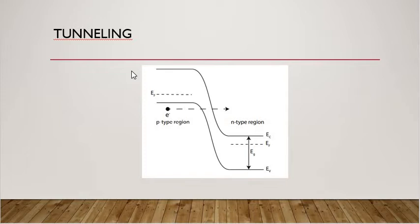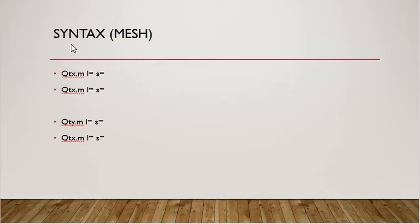I will teach you the syntax for defining quantum mass at the bottom. You define qt x dot m l, where l is the location as a spacing — similar to the mesh you have defined above with x dot m and y dot m, but here qt comes before x. So you define qt x dot ml equal to the location where tunneling occurs. If it is mentioned in your paper, you can directly use that location; if not, I will teach you how to find where tunneling is occurring and how to add the quantum mesh.